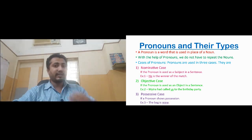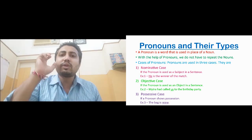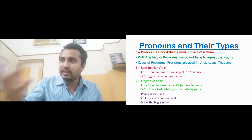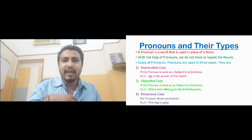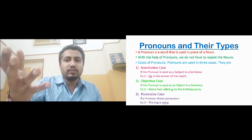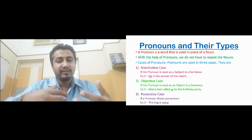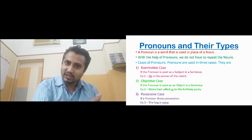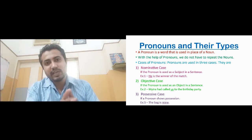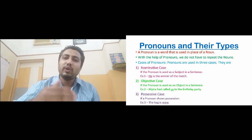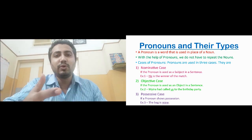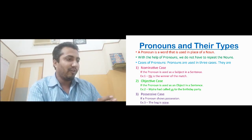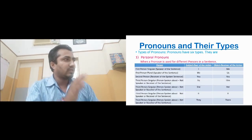Now let us look at the last case, which is the possessive case. Possessive case means that in a sentence, if a pronoun is showing possession — that is, something belongs to the pronoun — words like mine, ours, yours — if it is showing ownership, then that pronoun is in possessive case. So to recap: if it is the subject, it is subjective case; if it is the object, it is objective case; and if the pronoun is showing possession, it is in possessive case. I hope you are clear with the three cases.